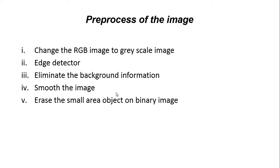This is a potential image. First, we change the RGB to grayscale, and then we will use an edge detector. In this program, we will use a reverse edge detector, and then eliminate the background information. We will use erosion operation on the image, then smooth the image using the closing operation, and then erase the small area objects on the binary image.